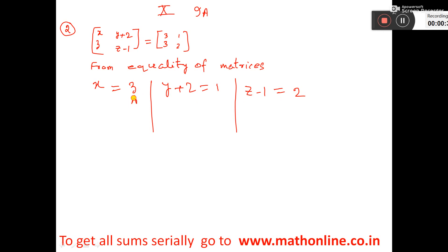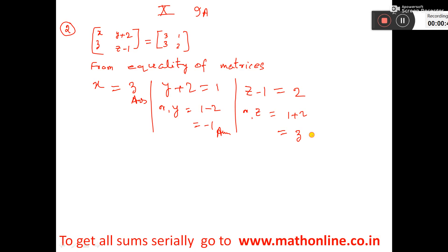So x is equal to 3 — the answer is already obtained. Here, taking 2 to the other side, 1 minus 2 is equal to minus 1, which is the value of y. And here, z is equal to — moving 1 to the other side — 3 is the answer.